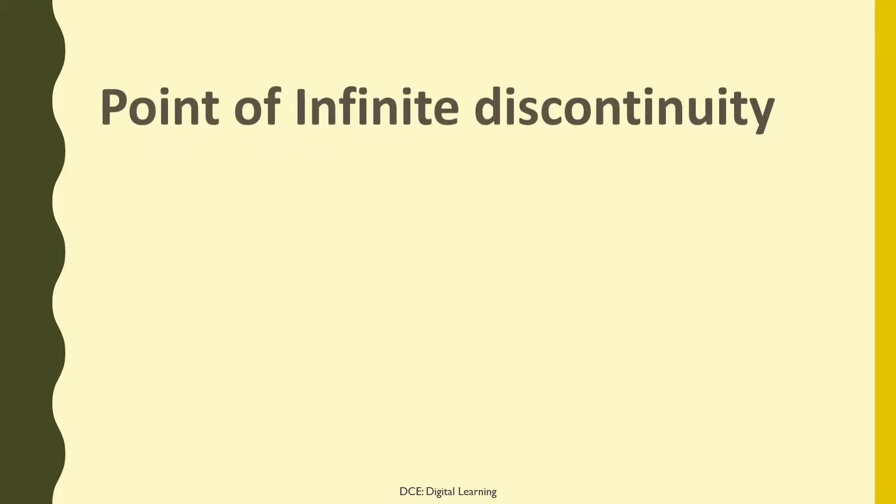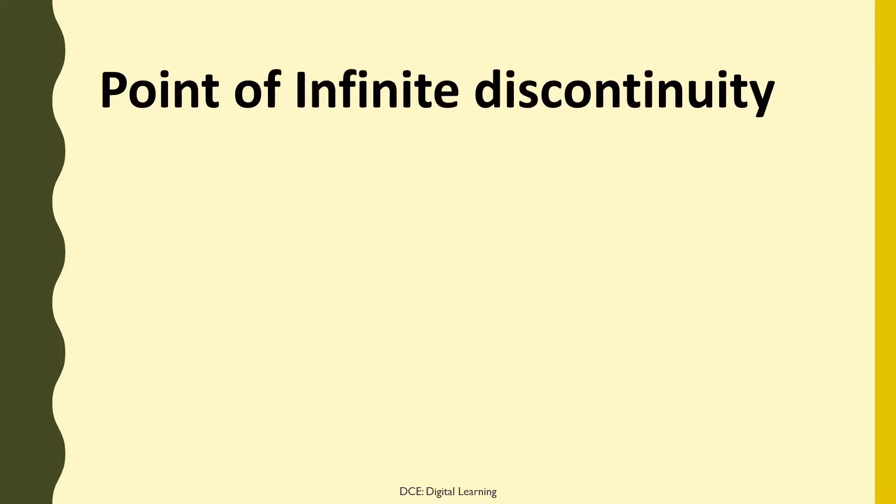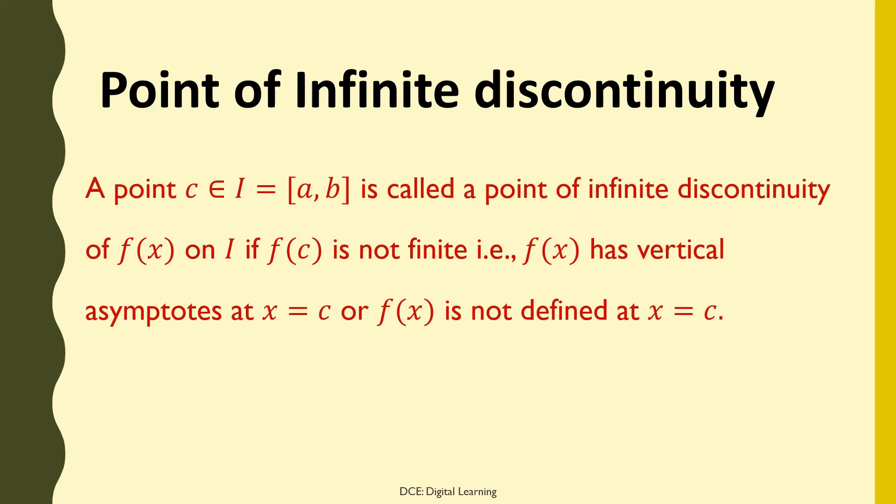Next, the definition of point of infinite discontinuity. A point c belonging to the closed interval [a, b] is called a point of infinite discontinuity of f(x) on that interval if f(c) is not finite — that is, f(x) has a vertical asymptote at x = c, or f(x) is not defined at x = c.